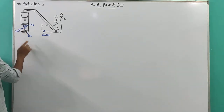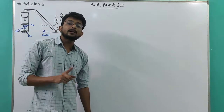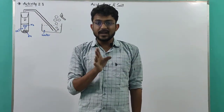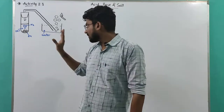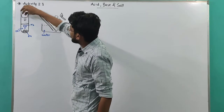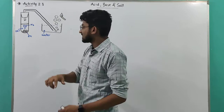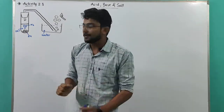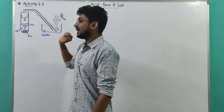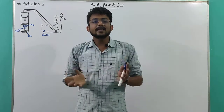When zinc is added, hydrogen gas will be released. We did this activity in the last chapter, but we didn't set up the apparatus like this. The hydrogen gas created here will travel through the tube into the second vessel filled with water. The hydrogen gas won't dissolve in water, so it will come out, and if we ignite it with a candle, we'll see sparkles.